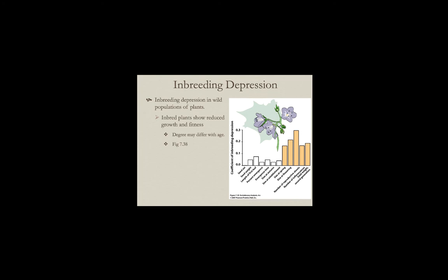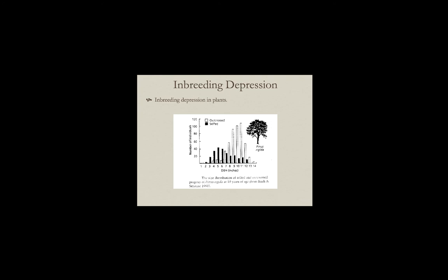Inbreeding depression also happens in plants. Looking at the coefficient of inbreeding depression — how bad is the inbreeding effect compared to outbred individuals — we see that for some traits the effect is really bad, in other traits not quite as bad, but outbred populations always do better. Some of these effects are associated with second-year traits, so the degree of inbreeding depression can hit different life history stages in a plant.